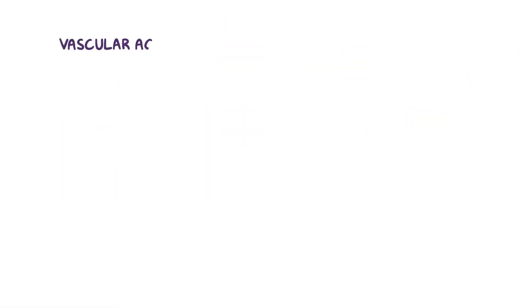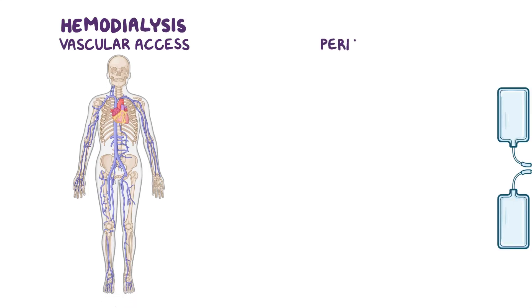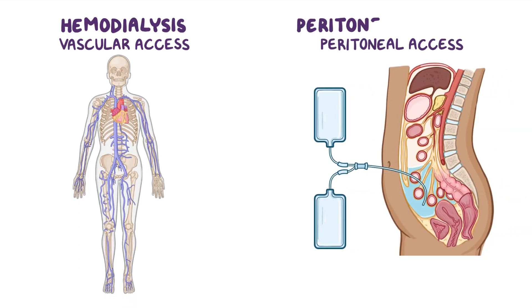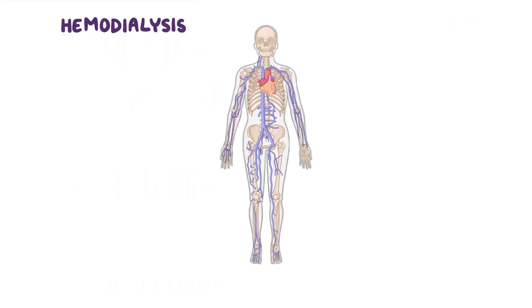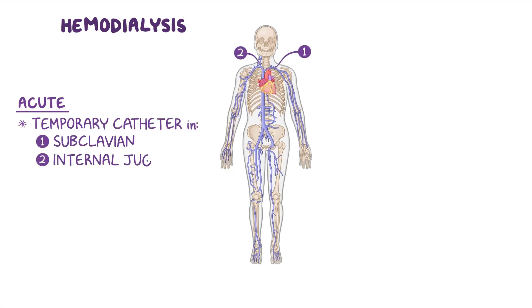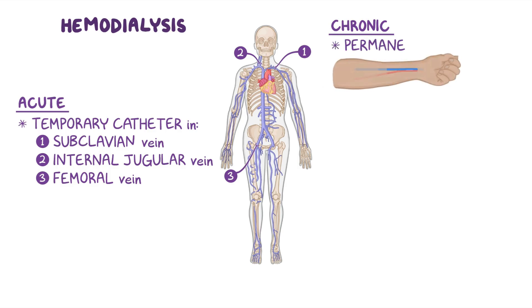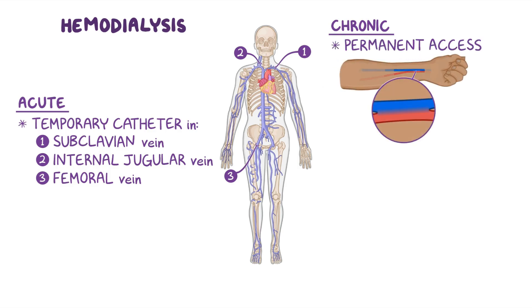To perform dialysis on a client, you'll need either vascular access for hemodialysis or peritoneal access for peritoneal dialysis. Hemodialysis requires venous access. In an acute setting, a temporary venous access is obtained through a temporary catheter in the subclavian, internal jugular, or femoral vein. Clients on chronic hemodialysis need a more permanent access, such as an arteriovenous or AV fistula, where a connection between a small artery and a vein in the arm — or less often the leg — is made surgically.